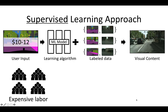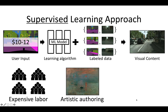For example, annotating an object class map costs more than $10, and we need tens of thousands of them to train a model. Sometimes the annotation requires artistic authoring — if you want to translate a real photo into Claude Monet's painting style, ideally only one person can do that for you, and he's not even around.